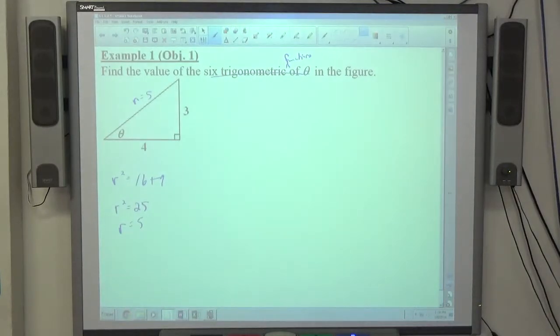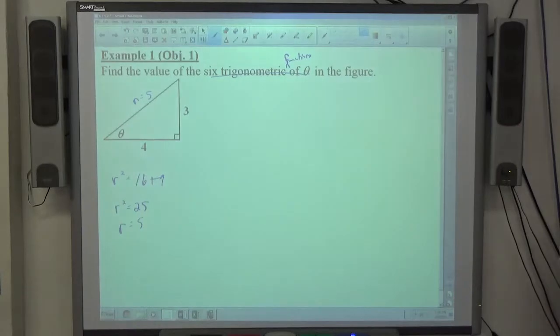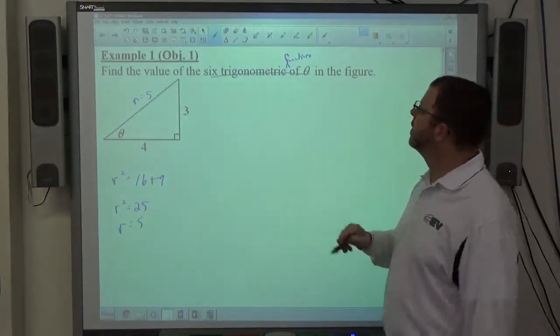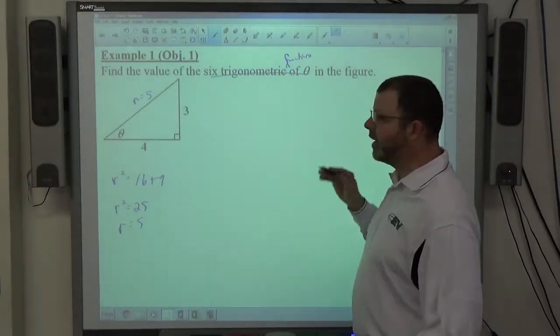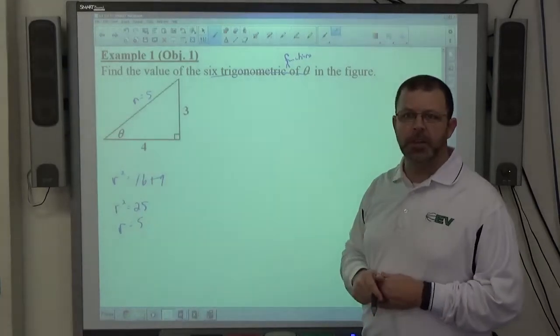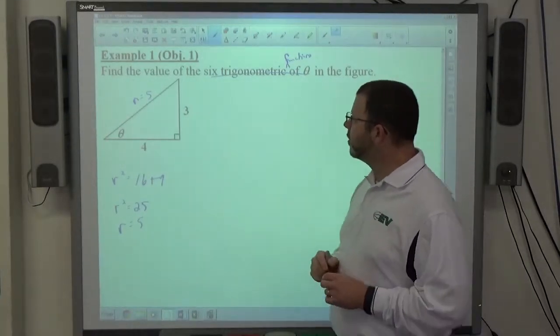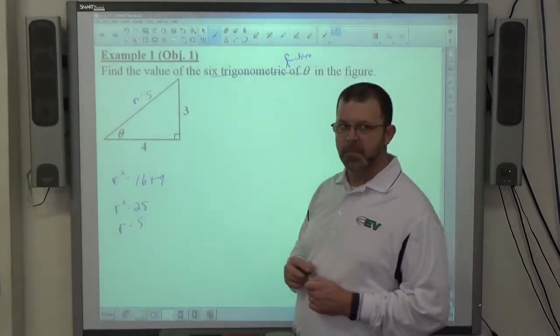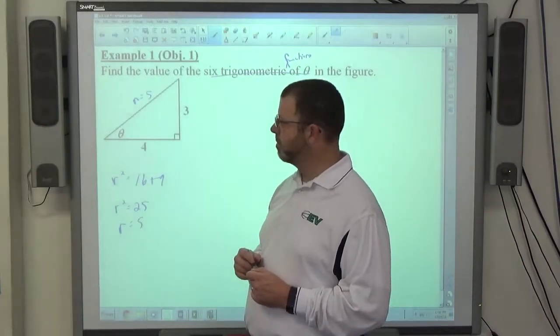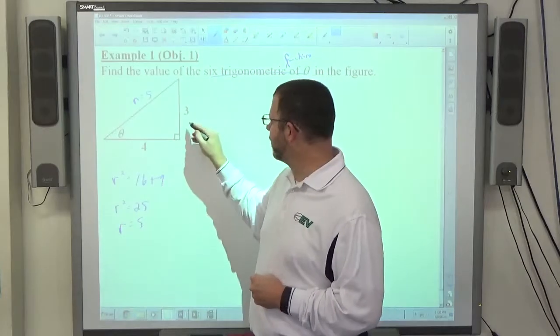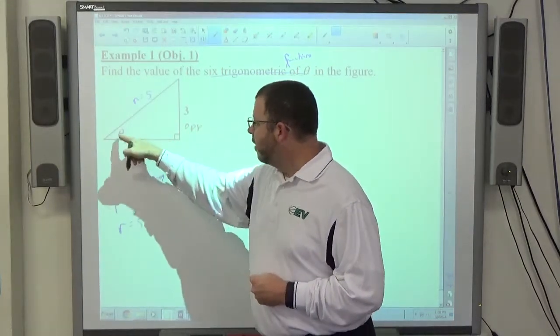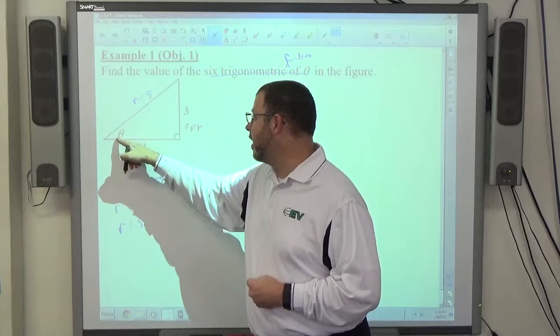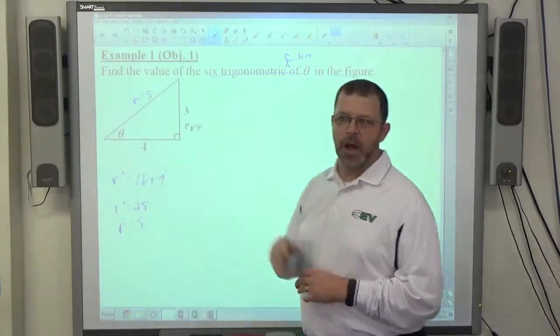So we're dealing with a right triangle. We want to find the length of each side. There are all three sides. Once I know the length of all three sides, now it's simply a matter of identifying these sides. It's either the opposite, the adjacent, or the hypotenuse. Let's go with Liz. Which side is opposite theta? Say it with more confidence. Three. Perfect. Opposite is 3. Here's my angle, my acute angle. I want to work with theta. I go across the triangle to find the opposite.